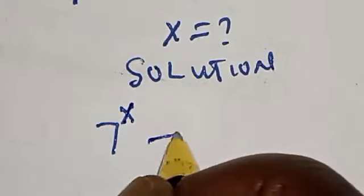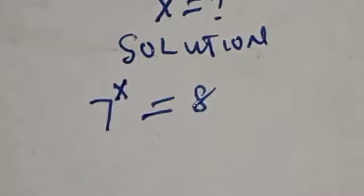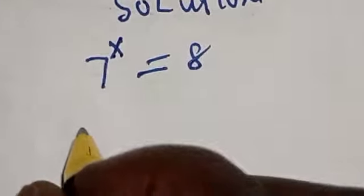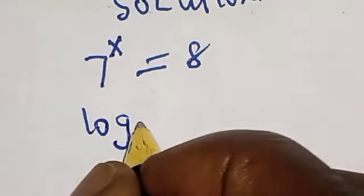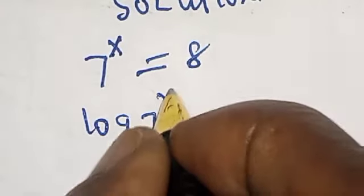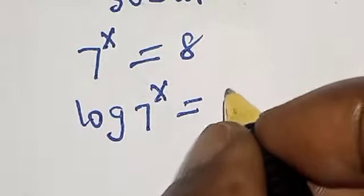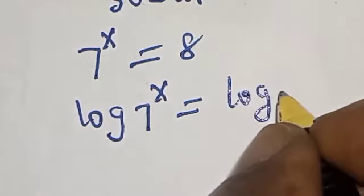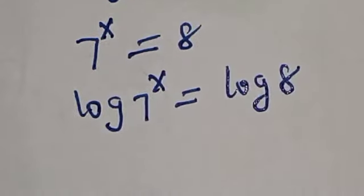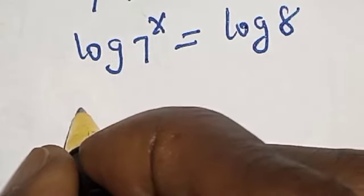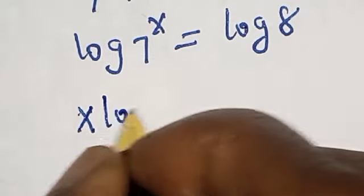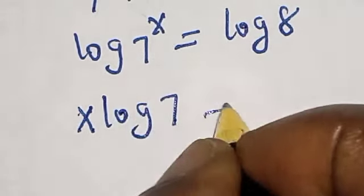7 raised to power x equals 8. Let's take the log of both sides. Log 7 raised to power x equals log 8. Now this is x log 7 equals log 8.